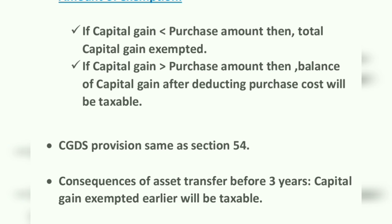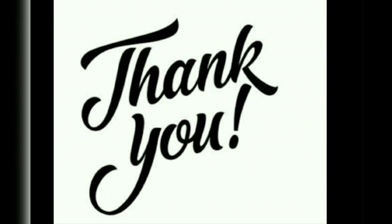The consequences are also the same as Section 54: if the asset is transferred before three years, then the capital gain so exempted will become taxable. This concludes the discussion on Section 54D and 54G. The other sections of the 54 series will be discussed in the next video. Thank you.